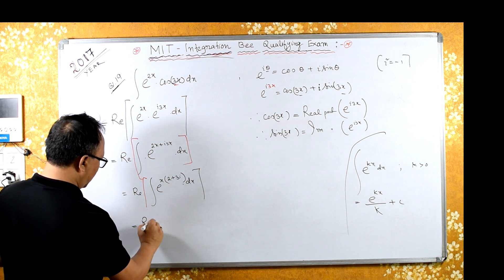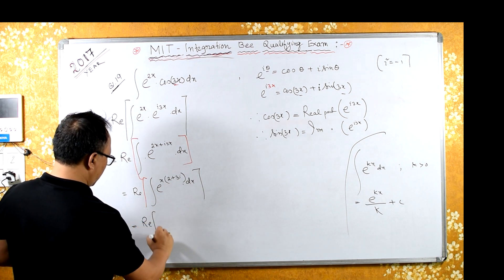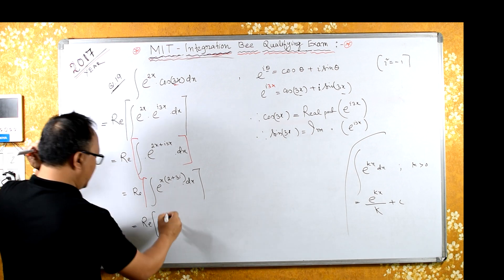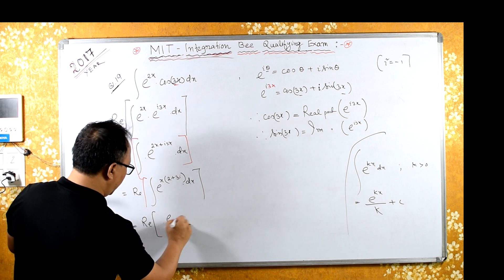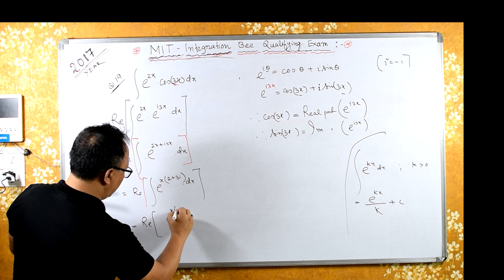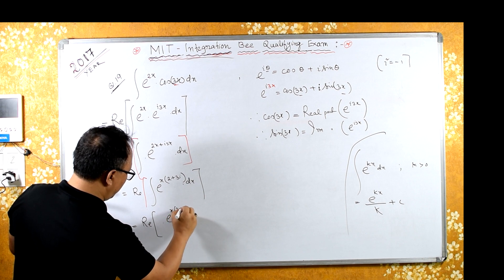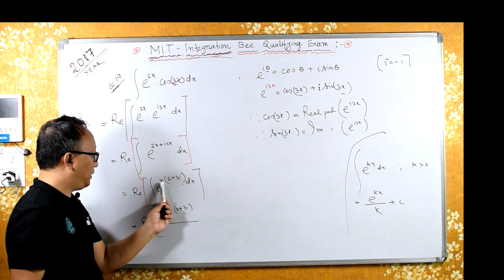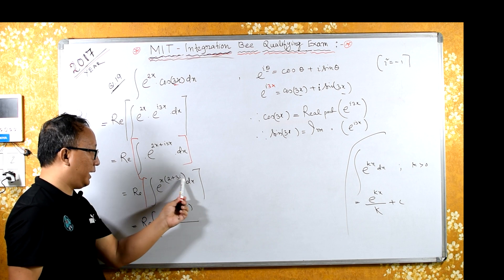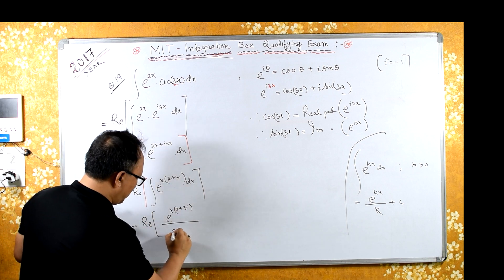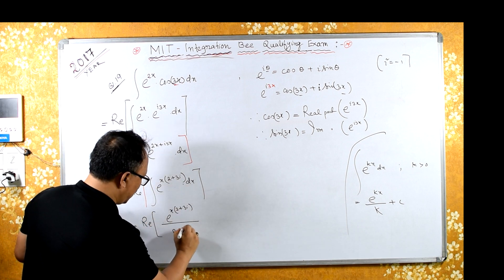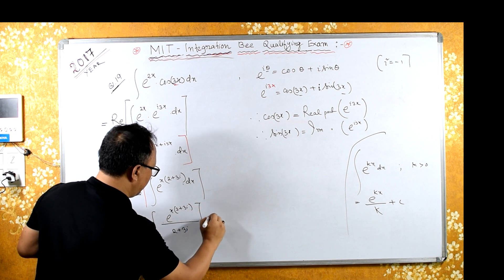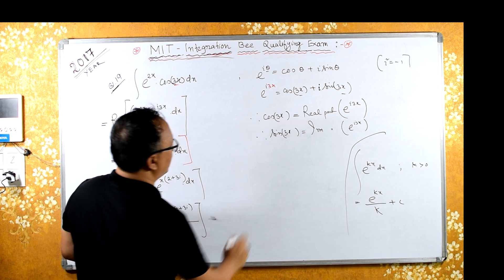Integrating, the result will be the real part of e raised to x(2 + 3i), divided by (2 + 3i), plus some arbitrary constant.